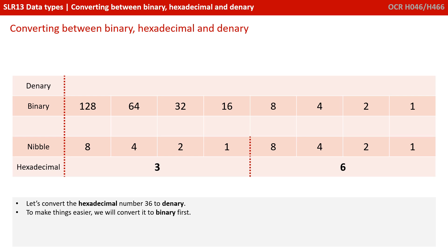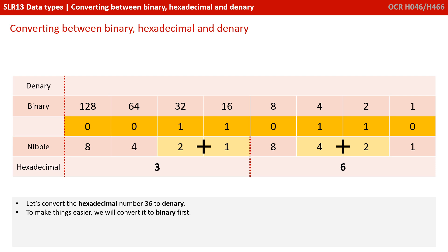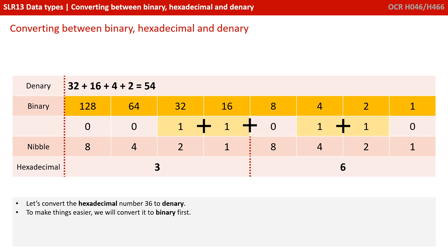Let's do one more: convert the hexadecimal number 3 6 — that's 3 6, not 36 — into binary and denary. Pause the video, take it through binary, and then unpause and see if you got the same answer. We've taken the 3 and written it as a 1 in the 2 column and a 1 in the 1 column. On the right-hand nibble we've got 6, so that's a 1 in the 4 column and a 1 in the 2 column. Adding the columns with 1s: 32 plus 16 plus 4 plus 2 equals 54.